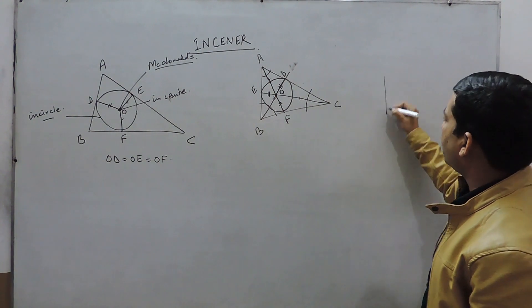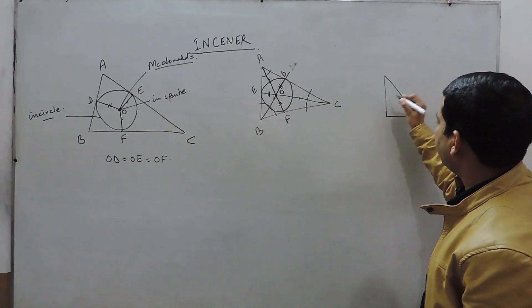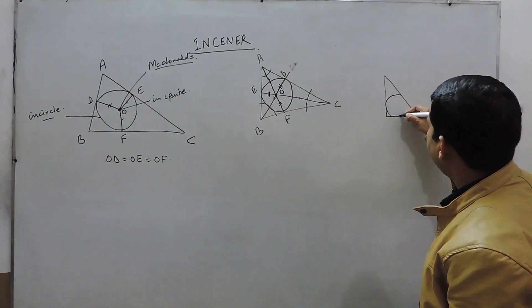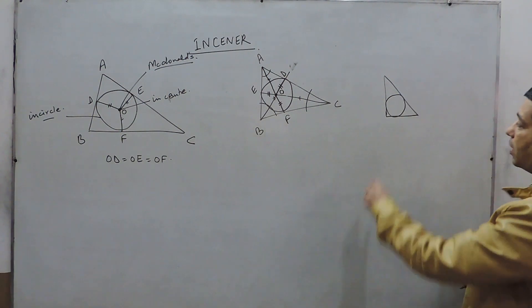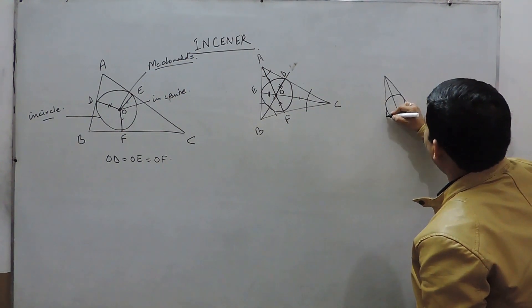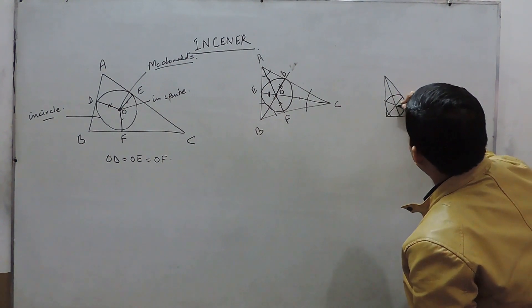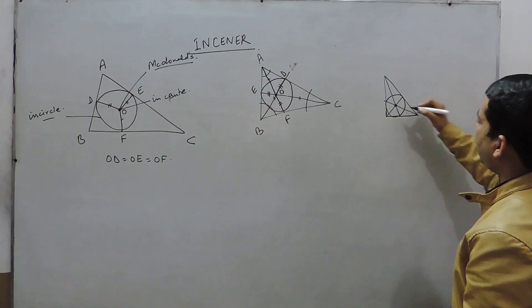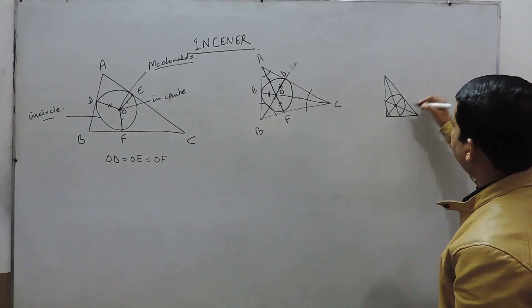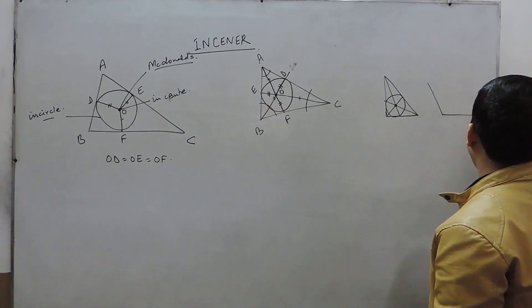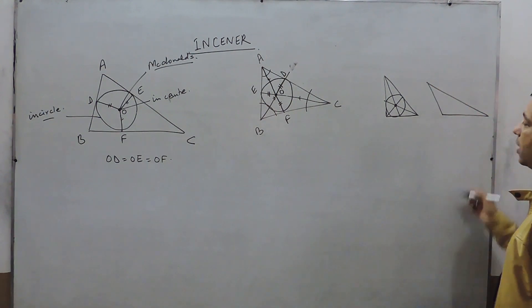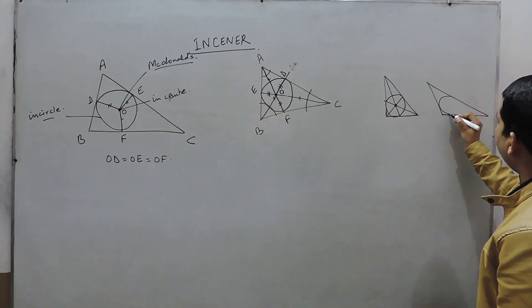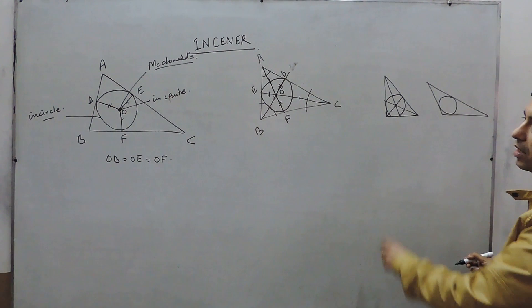If we talk about a right angle triangle, we can also construct the InCenter, but the InCenter will always remain inside the triangle because this is the point which is equidistant from all the sides.